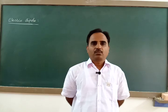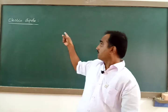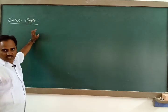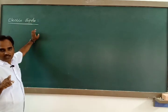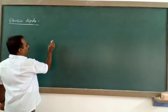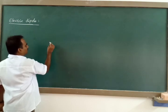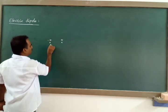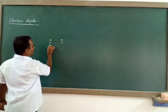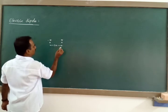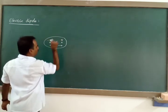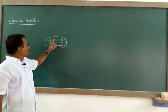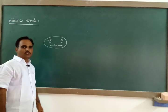Hey students, today I am going to take up the concept of electric dipole. A dipole consists of two equal and opposite charges separated by a small distance. Here, there is a charge minus Q and one more charge plus Q. These two equal and opposite charges separated by a small distance form a system called an electric dipole.